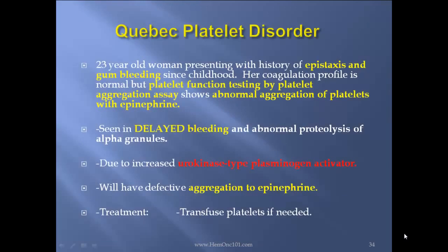Quebec platelet disorder case report: 23-year-old woman presenting with history of epistaxis and gum bleeding since childhood. Coagulation profile is normal but platelet function testing shows abnormal aggregation of platelets with epinephrine. Seen in delayed bleeding and abnormal fibrinolysis of alpha granules. It is due to increased urokinase-type plasminogen activator. It will have defective aggregation to epinephrine. Treatment: tranexamic acid if needed.